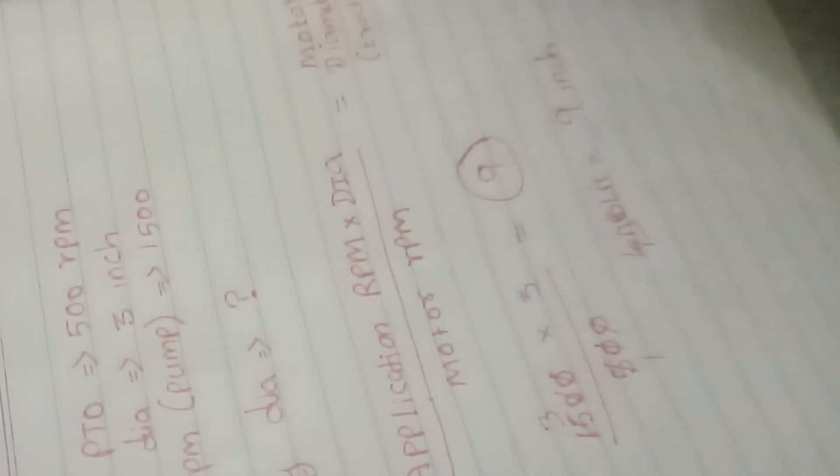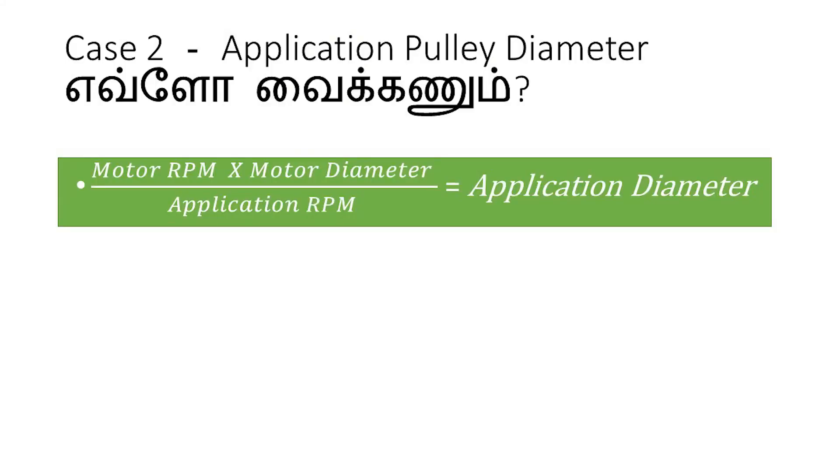We have a tractor kit. Now we have to calculate the motor and the diameter. The diameter is equal to the torque, and we have to divide the RPM and the diameter.